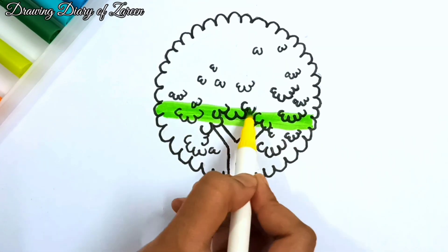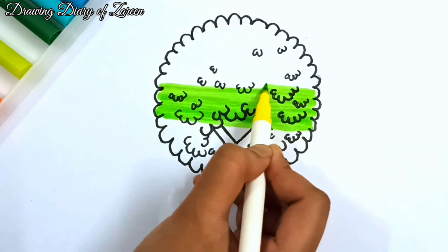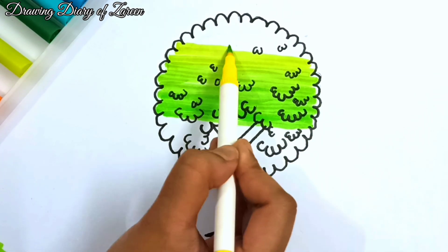Today I'm going to draw the easiest way of drawing a tree using the numbers 0, 1 and 3. So let's go to the video.